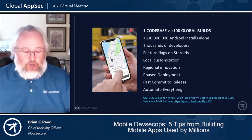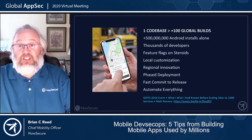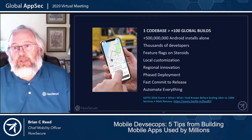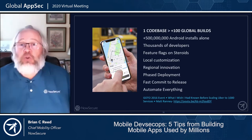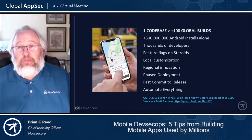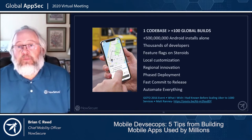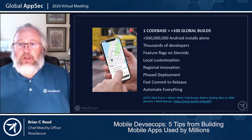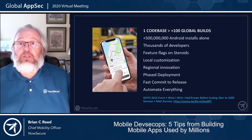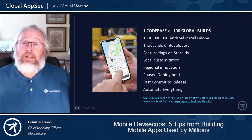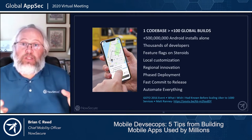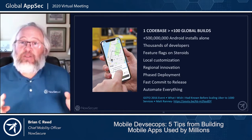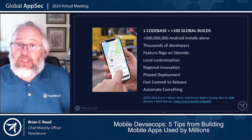Uber didn't even exist years ago and came to fruition in part because of the evolution of mobile capabilities. They have an astronomical install base — 500 million installs on Android alone. Imagine this scenario: you're on the application security team, you have thousands of developers all over the world, and you have one single source code stack for the consumer application that uses feature flags and compiles, builds differently in different regions and countries.